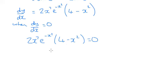And when we've got a product here, we've got two things being timed together to give us 0. So either 2x^7 times e^(-x^2) equals 0, or 4 minus x^2 equals 0.